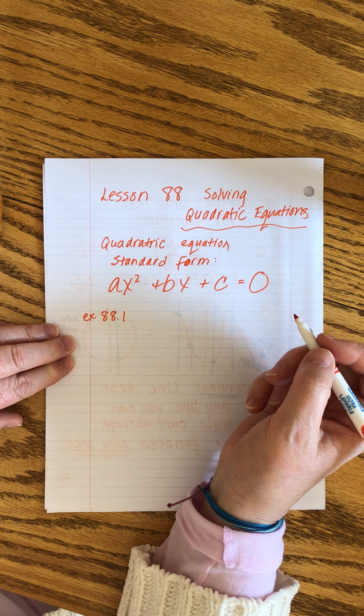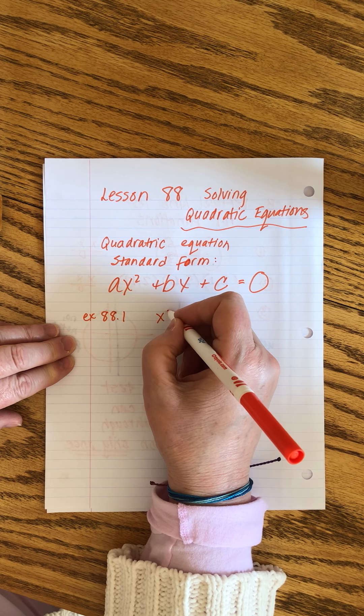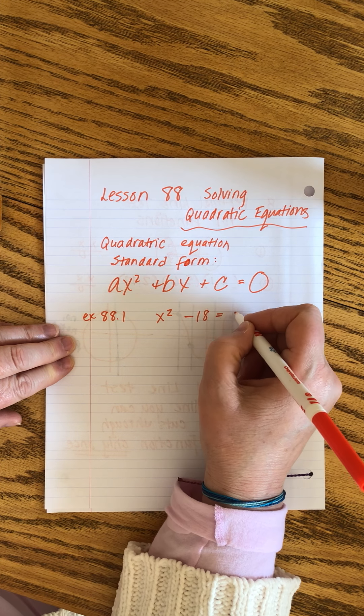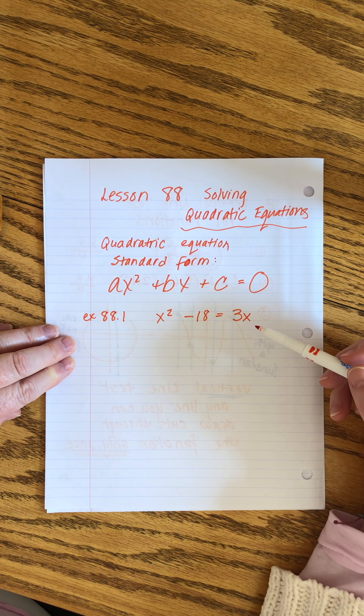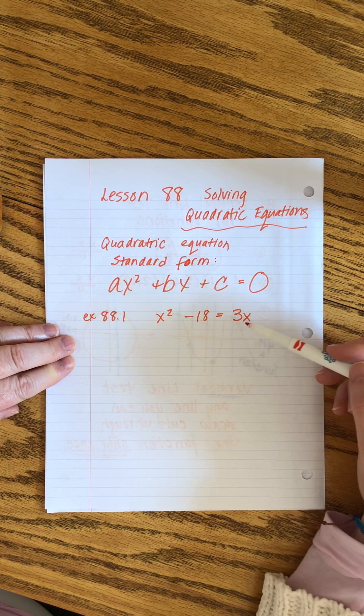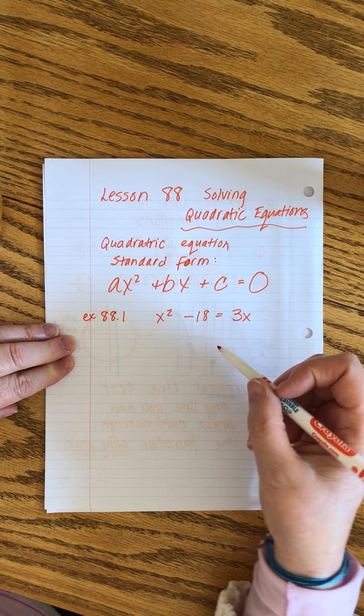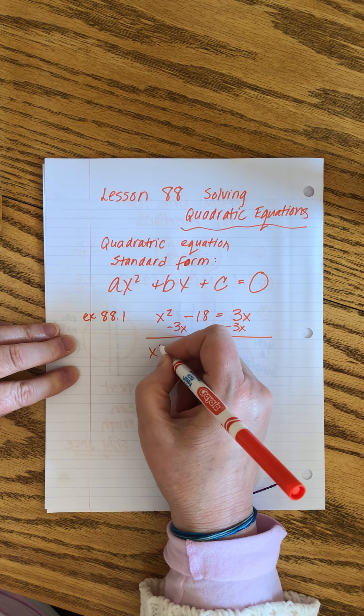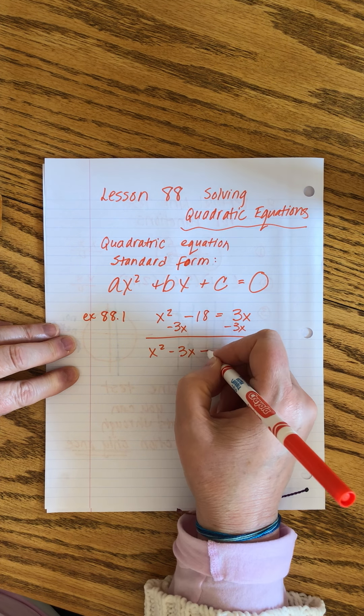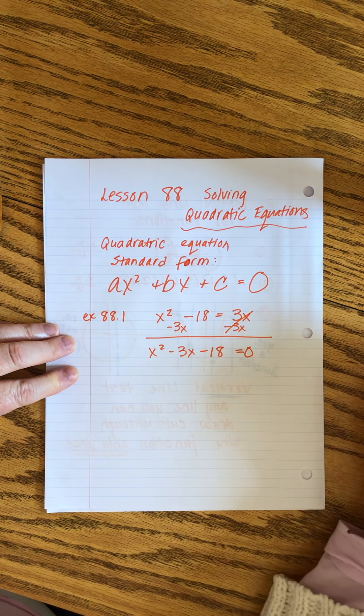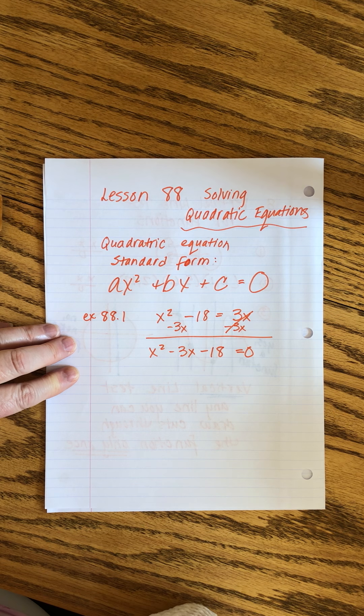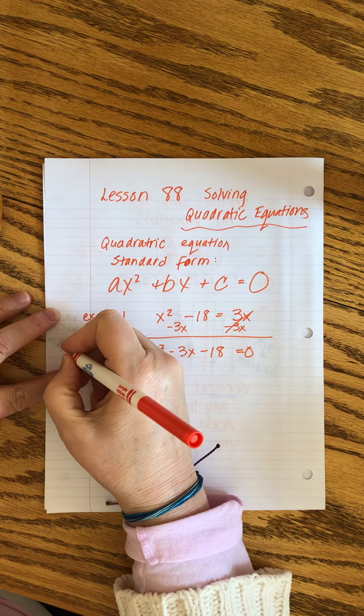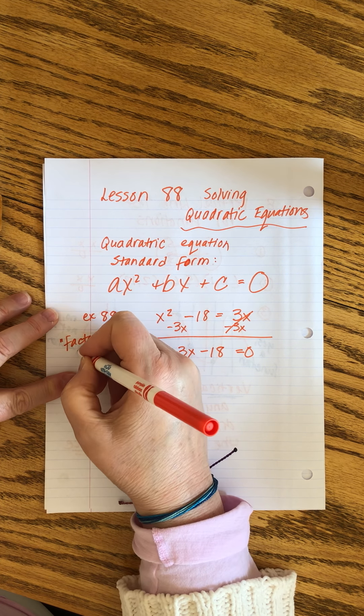Use the factor method to find the roots of x squared minus 18 equals 3x. The first thing we know before we even go anywhere else with this is this is messed up. We don't like this. So we're going to subtract the 3x and fix it.